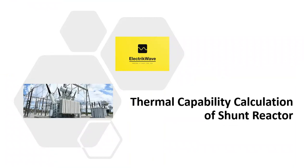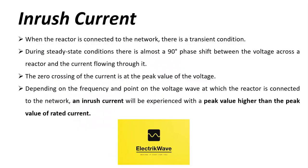Let's start with a discussion about the thermal capability calculation of shunt reactor. When the reactor is connected to the network, there is a transient condition. As mentioned in IEC, during steady state conditions, there is almost a 90 degrees phase shift between the voltage across a reactor and the current flowing through it. The zero crossing of the current is at the peak value of the voltage. Depending on the frequency and point on the voltage wave at which the reactor is connected to the network, an inrush current will be experienced with a peak value higher than the peak value of rated current.